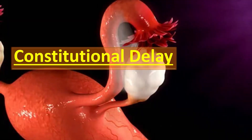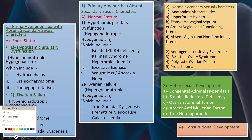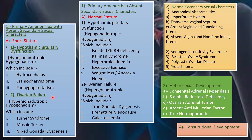This is a whole summary of all the causes of primary amenorrhea. Let us revise again. We divide the causes into four main groups: primary amenorrhea with absent secondary sexual characteristics shown in the blue table; with normal secondary sexual characteristics in the yellow box; heterosexual development in the green box; and constitutional development in the orange box.